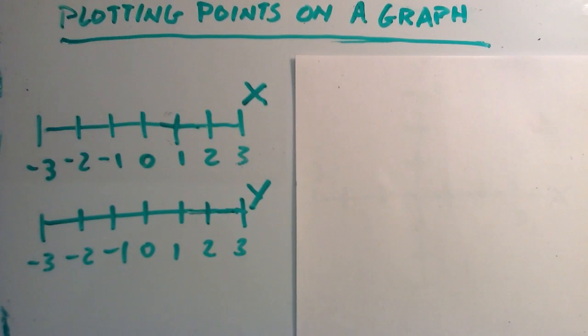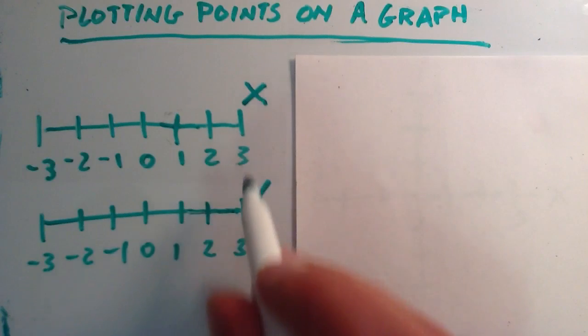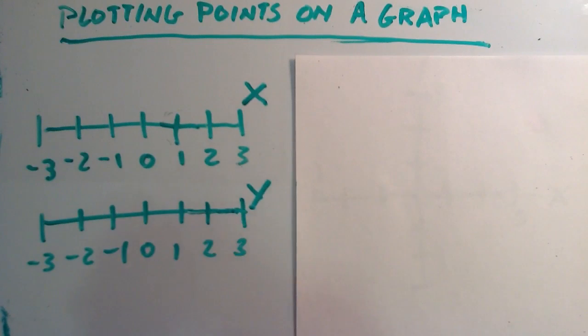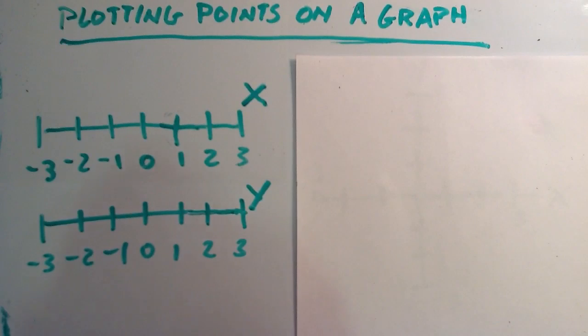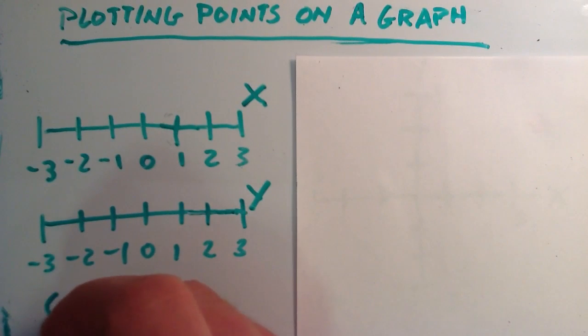Plotting points on a graph is a natural extension of plotting points on a number line. So I went ahead and drew two number lines here, and I labeled the first one x and I labeled the second number line y. And the reason why I did this is because plotting points on a graph requires two components: an x component and a y component.